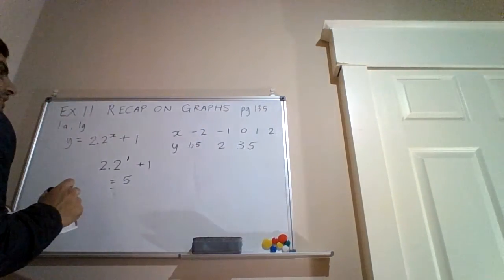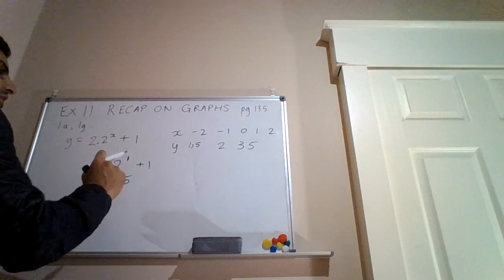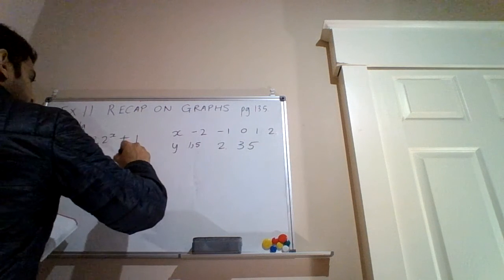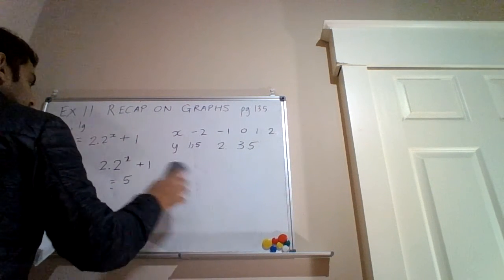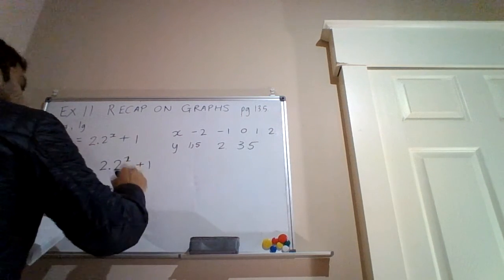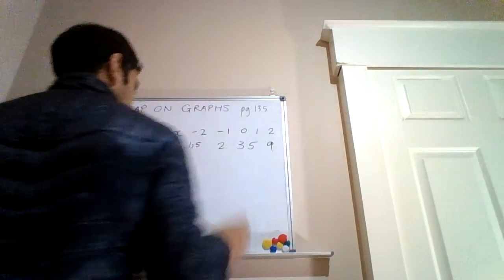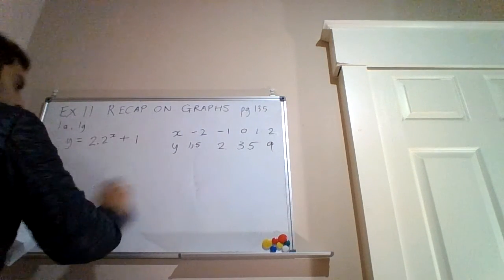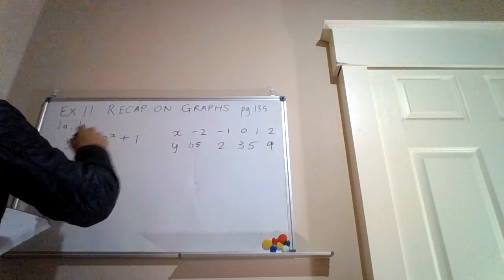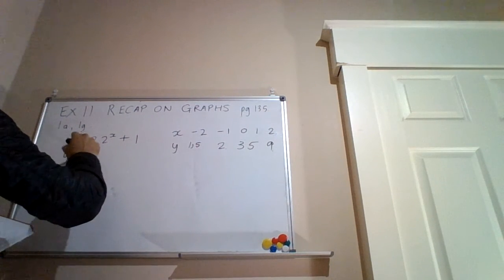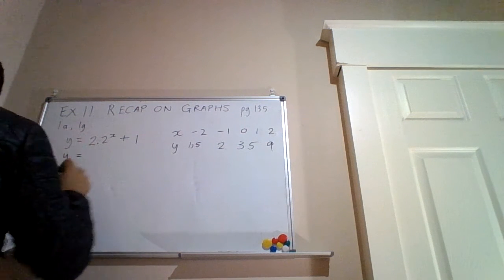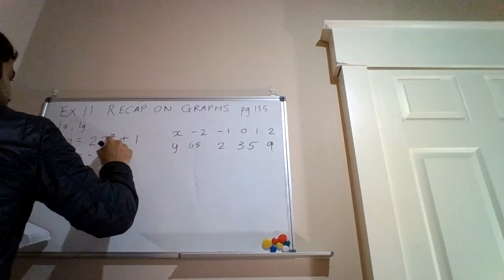We still need to do the parabola so let me include x equals 2: 2 to the power of 2 is 4, times 2 is 8, plus 1 is 9. Now let me recall the equation for the parabola: y equals minus 3x squared plus 3.